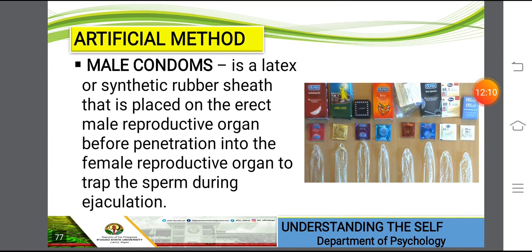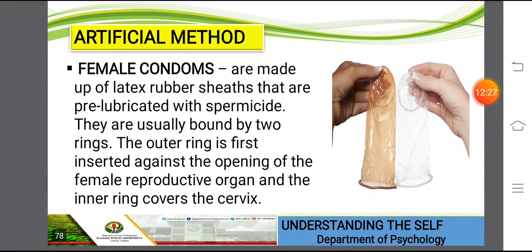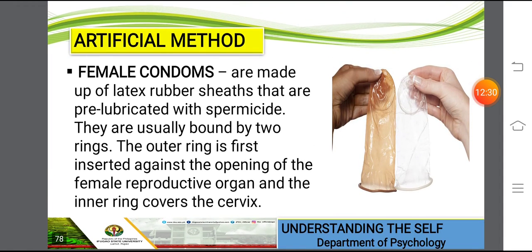The most common method is the male condom — a latex or synthetic rubber sheet placed on the erect male reproductive organ before penetration into the female organ to trap the sperm during ejaculation. There is also a female counterpart made of latex rubber sheets pre-lubricated with spermicide. They are usually bound by two rings: the outer ring is inserted against the opening of the female reproductive organ and the inner ring covers the cervix.